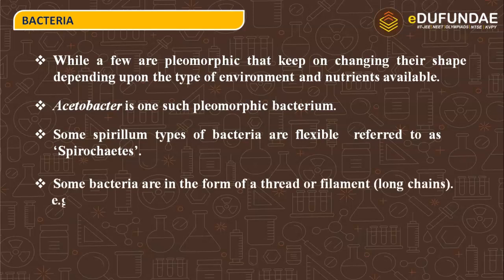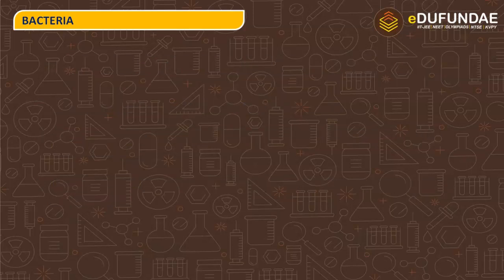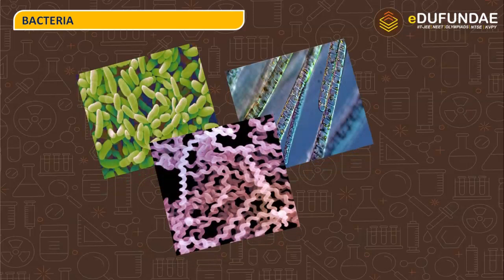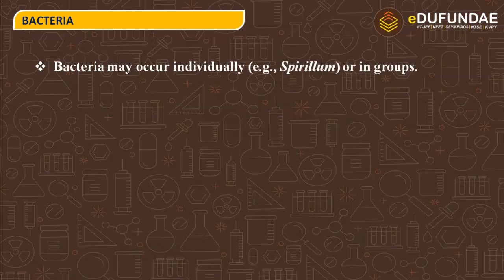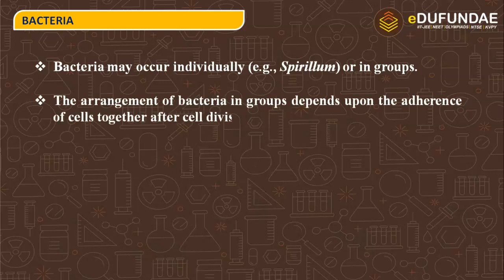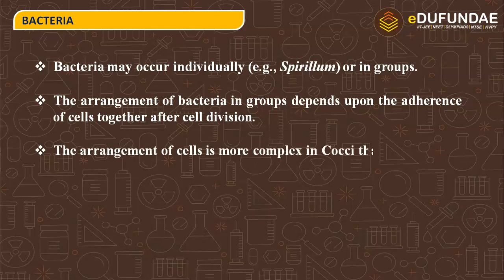Some spirillum-type bacteria are flexible and are referred to as spirochetes. Some bacteria exist in the form of a thread or filament — long chains — for example, Beggiatoa. Bacteria may occur individually, as in spirillum, or in groups. The arrangement in groups depends on the adherence of cells after cell division, and it is more complex in cocci compared to bacilli.